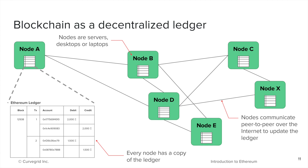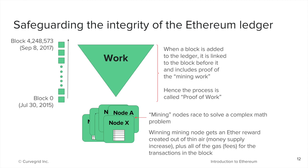What if one of these nodes wanted to misbehave — for example, spend the same Ether twice? For a block to be considered valid and appended to the ledger, the majority of nodes need to certify that it is correct — for example, that the same Ether is not being spent twice. To prevent something called a Sybil attack, where a malicious actor runs a very large number of nodes in an effort to control the majority of them, block certification requires a node to solve a very difficult mathematical problem to prove that their node has actual computing power behind it. This process is called mining a block, or proof-of-work.